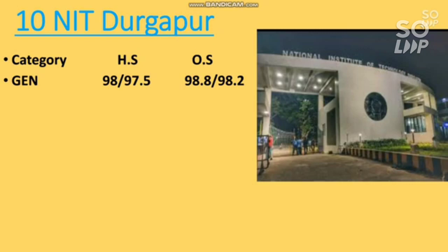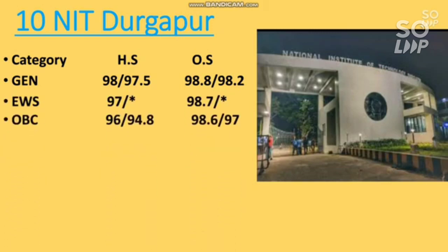For General home state, female cutoff is 97.5. For other state students it is 98.8 for male and 98.2 for female. I will discuss only other state cutoff — you can check all other cutoffs by pausing the video. For EWS it is 98.7 for other state male. Wherever you find a star mark, that means that category is not reserved in that NIT for EC branch.